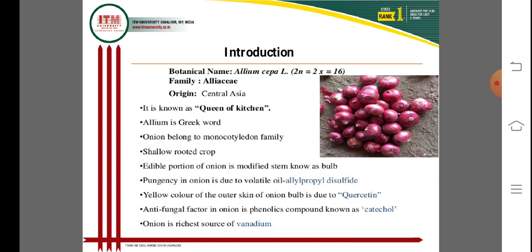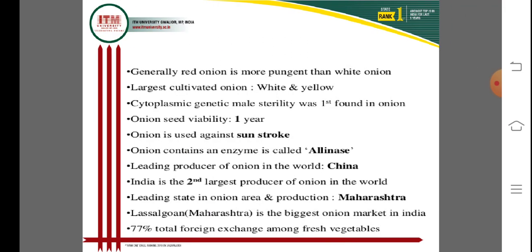Onion is a source of vanadium, an important compound. Generally, red onion is more pungent than white onion. The largest cultivated onions are white color and yellow color onions, which are produced all over the world. Cytoplasmic genetic male sterility was first found in onion — very important for breeding programs. Onion seed viability is one year, after which germination declines.